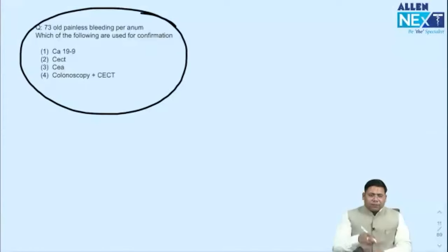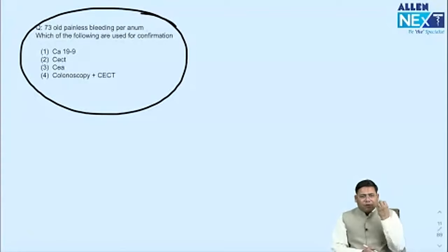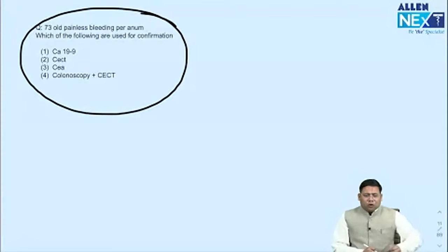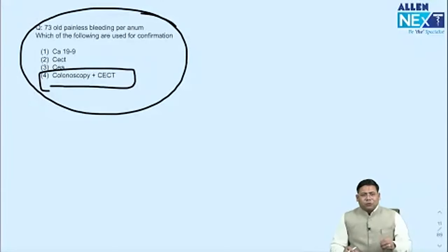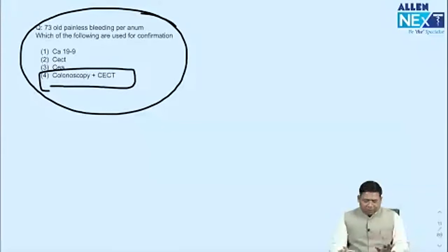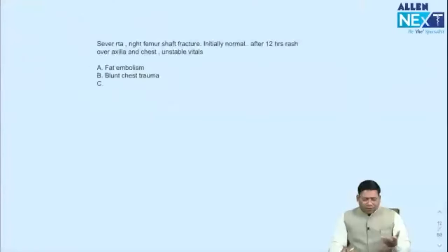A 73-year-old patient presenting with chronic bleeding per rectum — what is the best investigation? When there is bleeding per rectum, colonoscopy and CT colonography (CTC) are the most probable best investigations to rule out any tumor or benign pathology. Colonoscopy and CTC are the answer in this case.